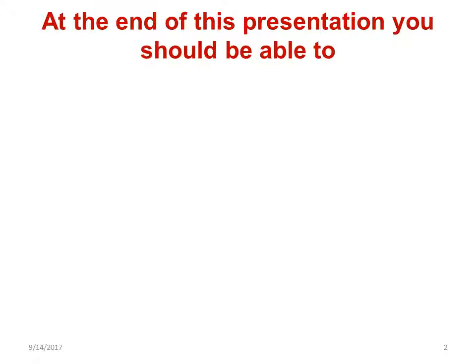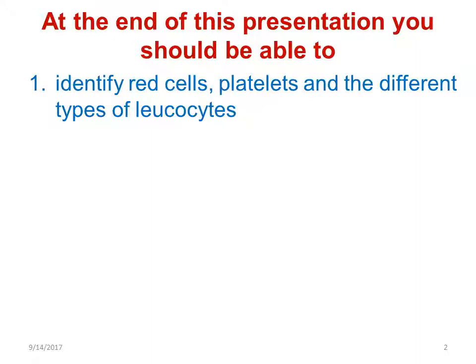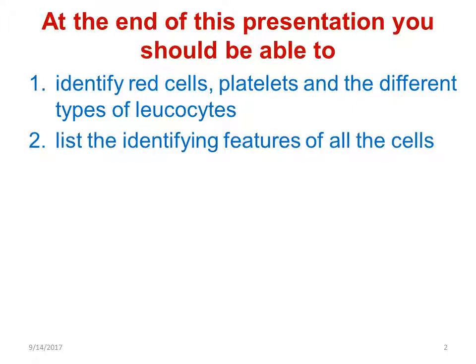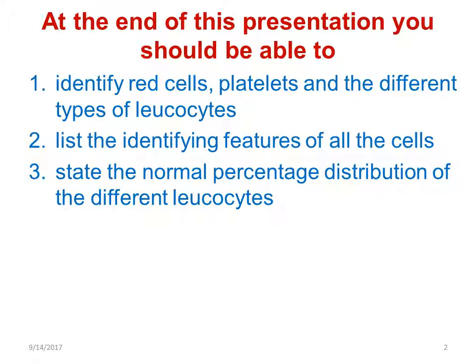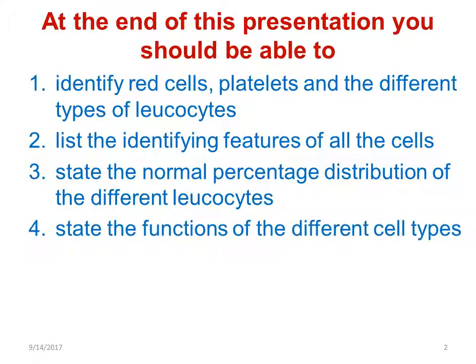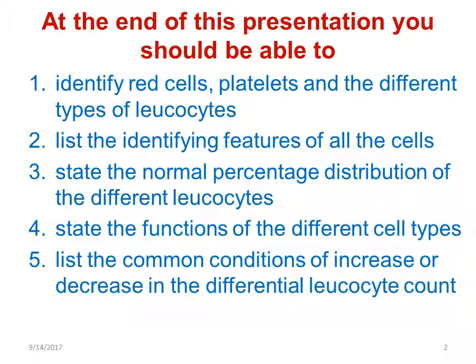At the end of this presentation you should be able to: number one, identify red cells, platelets, and the different types of leukocytes; secondly, list the identifying features of all the cells; next, state the normal percentage distribution of the different leukocytes; then state the functions of the different cell types; and finally, list the common conditions in the differential leukocyte count.